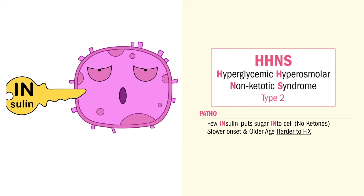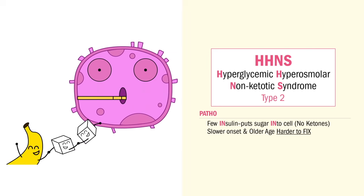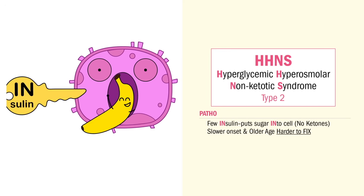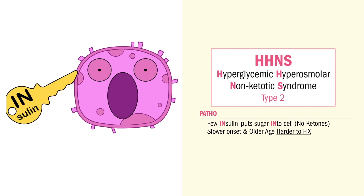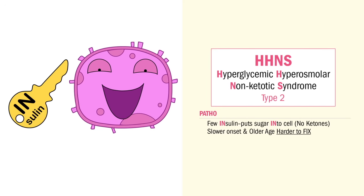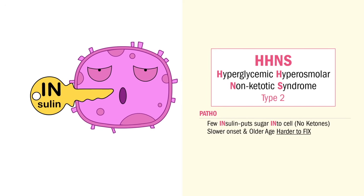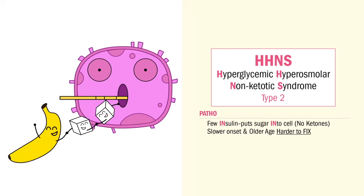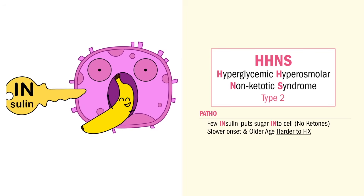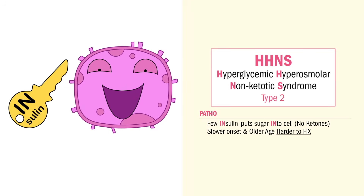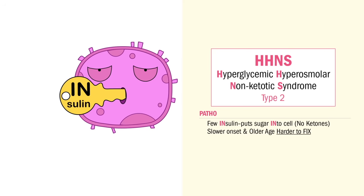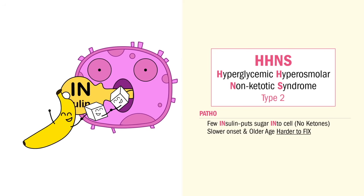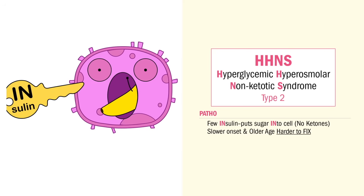Since the body has barely enough insulin to put sugar into the cell, the body burns sugar for fuel, so we don't get those ketone bodies. In type 2, you have a few insulins working — so no fat burn, no ketones, since the body's burning glucose.